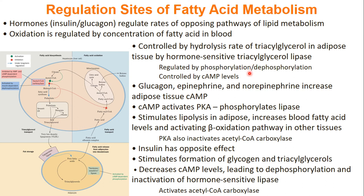This phosphorylation and dephosphorylation is itself controlled by cyclic AMP levels. Hormones such as glucagon, epinephrine, and norepinephrine can increase the amount of cyclic AMP in your adipose tissue. When you have high levels of cyclic AMP, it can activate PKA, which will phosphorylate our lipase. Once our lipase is phosphorylated, we can have lipolysis in our adipose tissue.